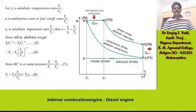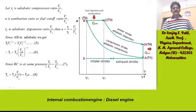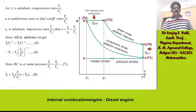Since AB is adiabatic, we get T1 × V1^(gamma−1) = T2 × V2^(gamma−1), which is equation 5. From this, T1 = T2 × (V2/V1)^(gamma−1), which is equation 6. Since BC is at constant pressure, T3/V3 = T2/V2, giving equation 7. From this, T3 = T2 × (V3/V2) = T2 × E, which is equation 8.